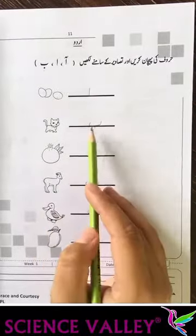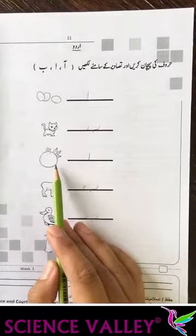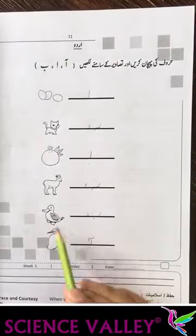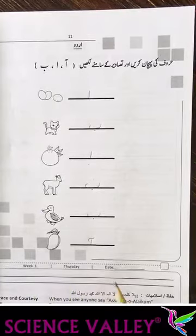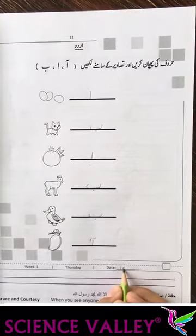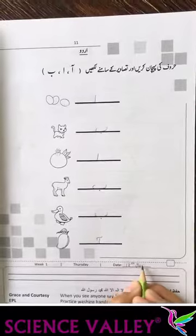Alif se andra, be se billi, alif se anar, be se bakri, be se betak, alimada se am. Week 1, date, day 18 June.